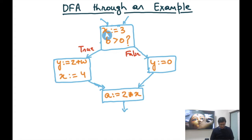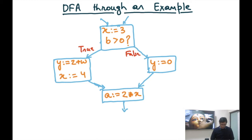The example says x is assigned 3. If b is greater than 0, then on the true branch, y is equal to z plus w and x is assigned 4. If it's false, then assign 0 to y. In both cases, you come to the fourth basic block which does a equals 2 times x.